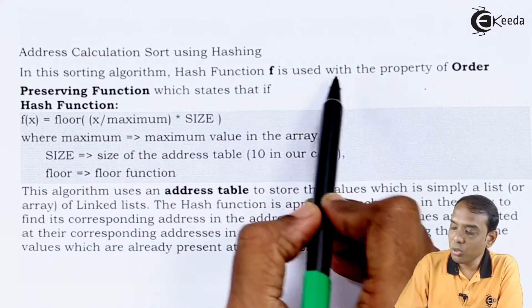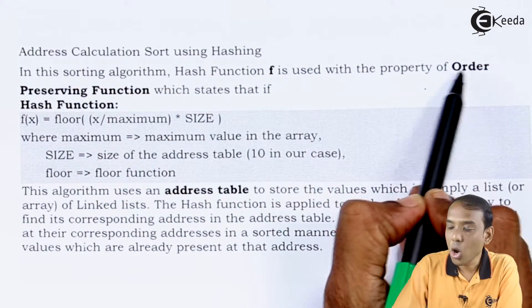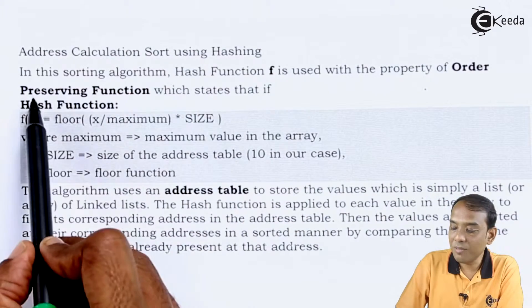A hash function f is used with the property of ordering preserving function. That is very important. We are going to preserve the order. Hence the name order preserving function.